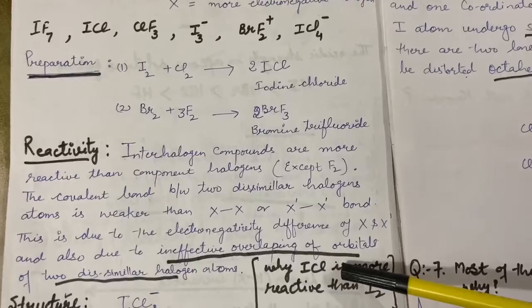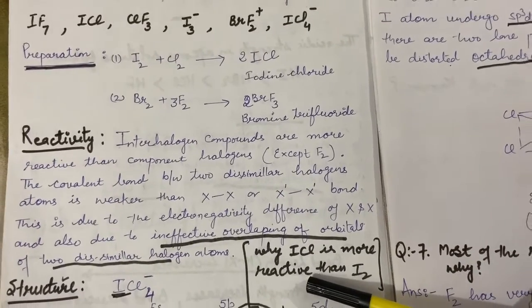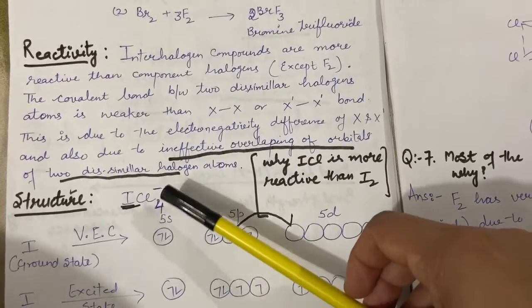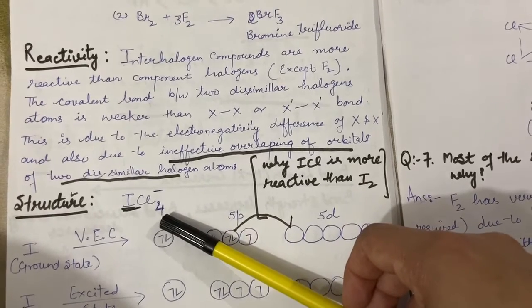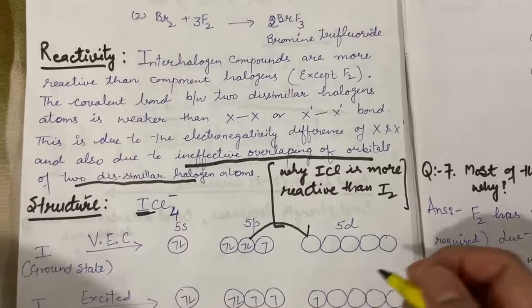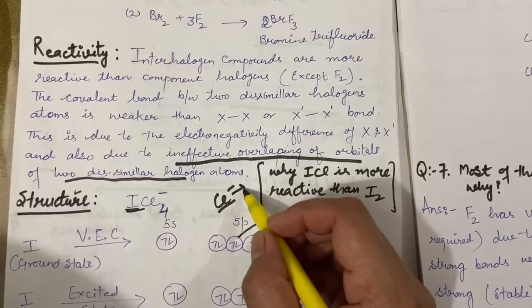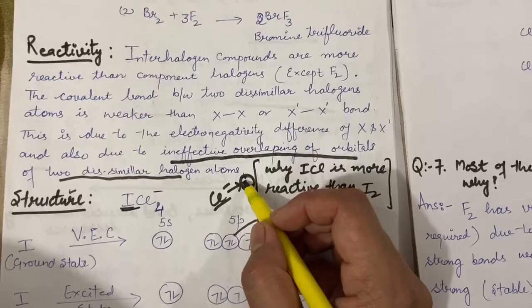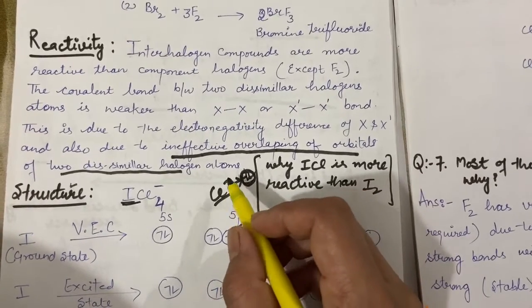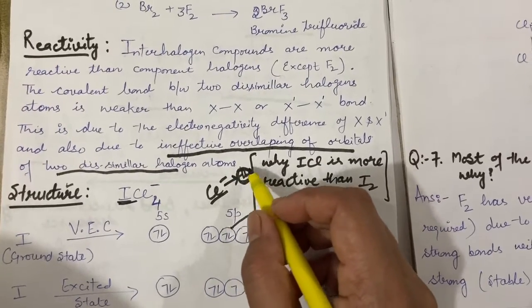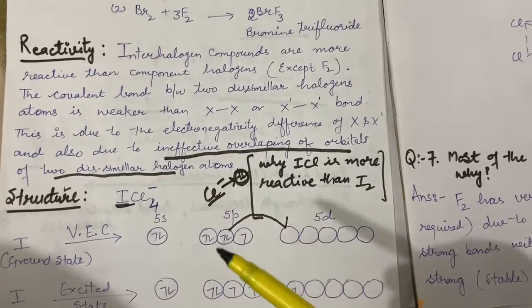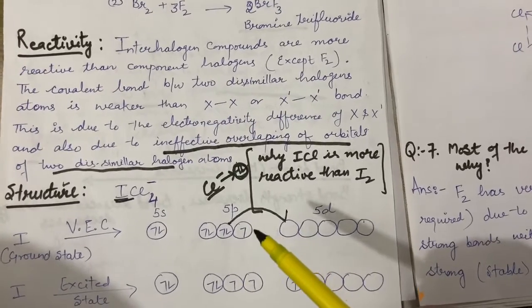We have discussed previously that interhalogen compounds are more reactive due to ineffective overlapping of orbitals between two dissimilar halogen atoms. Now we will discuss the structure of interhalogen compound in detail. Taking the example of ICl4⁻ ion - there are 4 Cl atoms, one of which is Cl⁻, meaning that Cl⁻ ion will donate both of its electrons to form a coordinate bond. This means Iodine needs an empty d-orbital.